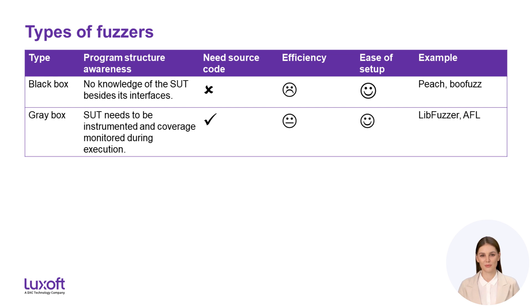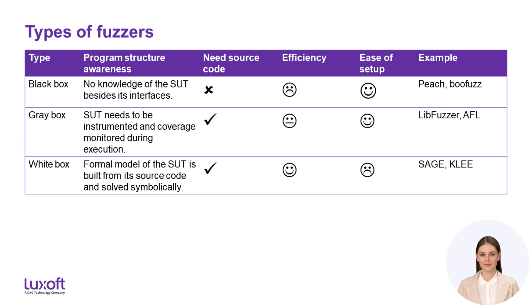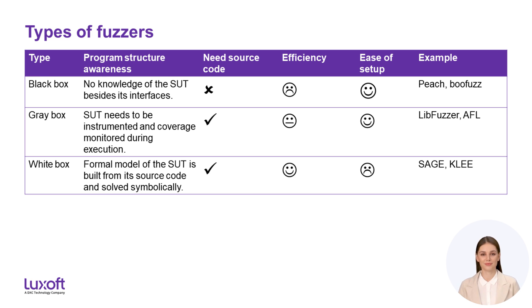Gray box fuzzers are relatively easy to integrate but are less efficient than white box fuzzers in terms of finding all possible behaviors. White box fuzzers analyze source code, build a formal specification of the software, and perform symbolic execution, obtaining a list of constraints for each execution branch. By solving those constraints they generate a list of test cases fully informed of which data leads to which code branch. This approach exposes bugs hidden deep in the program, but the time needed for such analysis can become prohibitive.